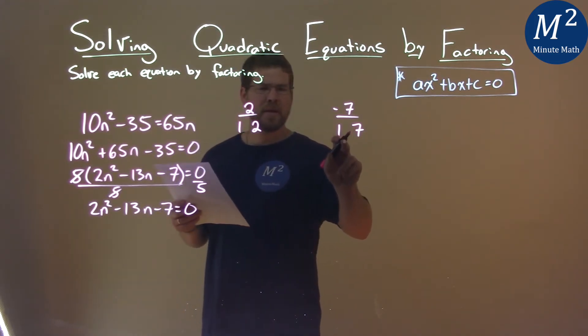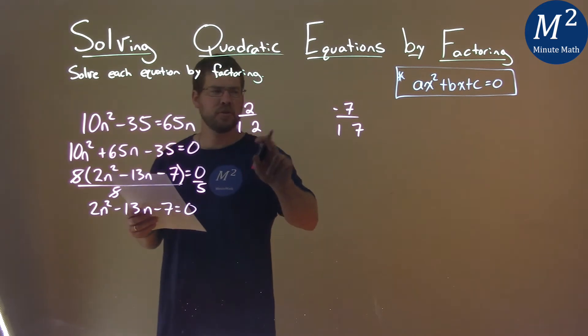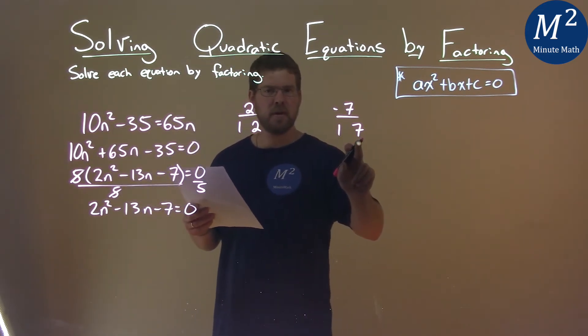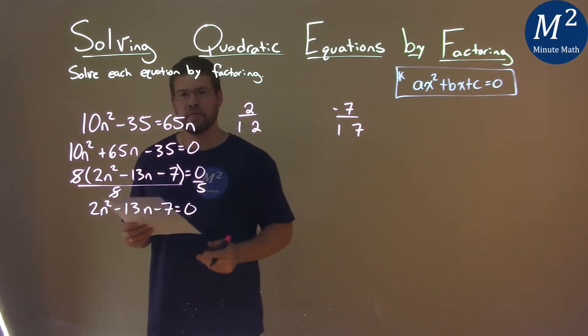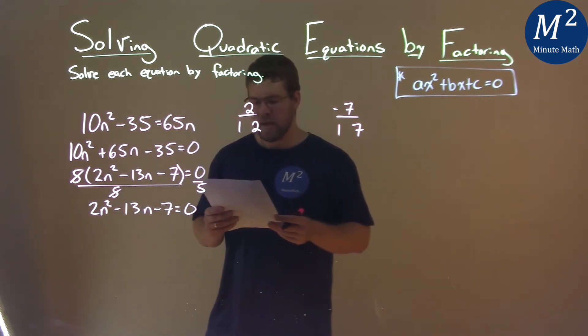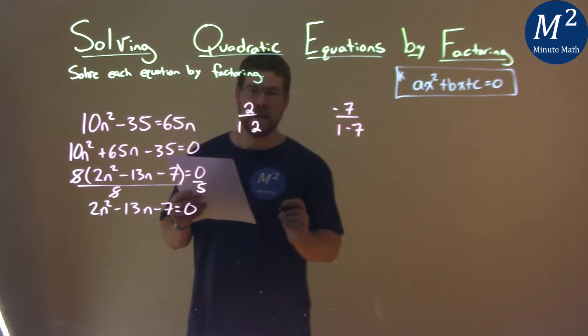So with one of them being negative, we have to think, okay, 2 times one of these numbers plus 1 times the other number, which one gives us negative 13? And that's actually going to be when the 7 is negative.